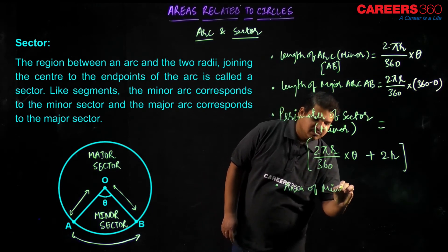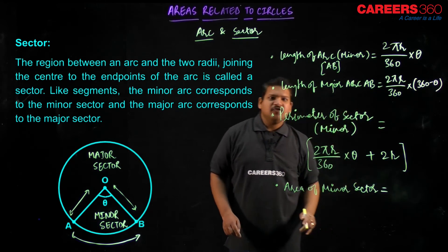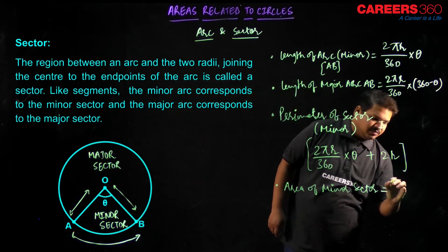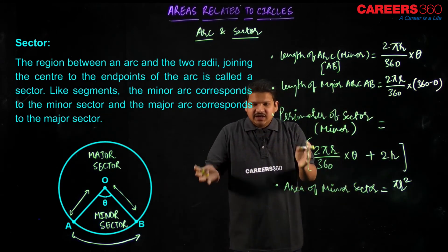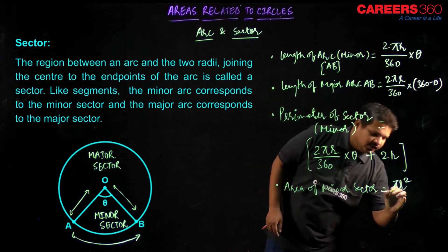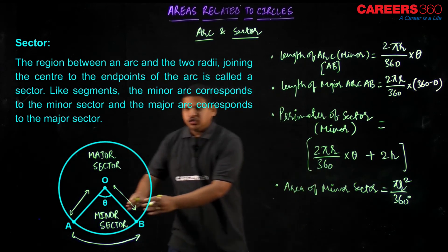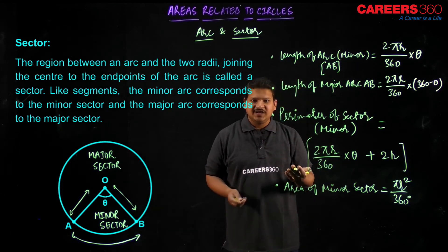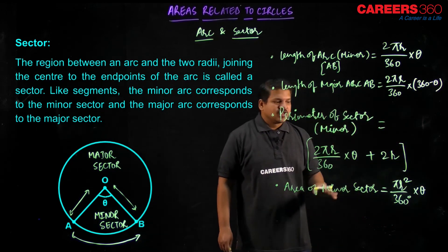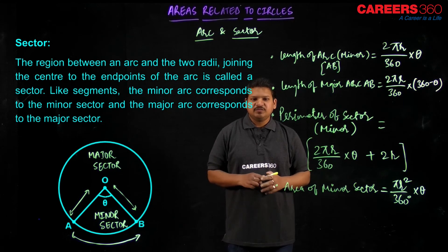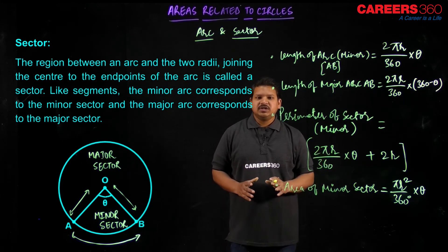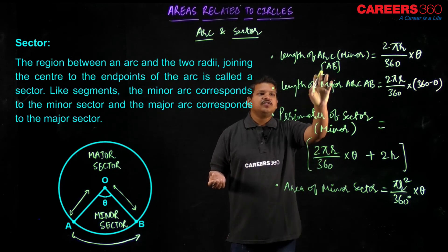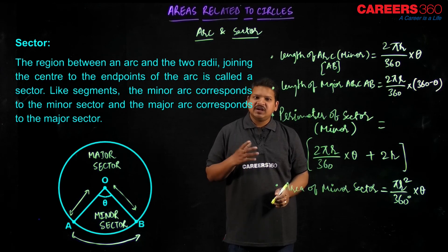Now coming to the area of the minor sector. The complete area of the circle is πr². If I divide this entire area into 360 equal parts, one part corresponds to 1 degree. Since the sector subtends angle theta, I multiply by theta. So the area of minor sector = (πr² / 360) × θ. Similarly, for the area of the major sector, replace theta by (360 − θ). That is how we calculate the length of arc, and the perimeter and area of both minor and major sectors.